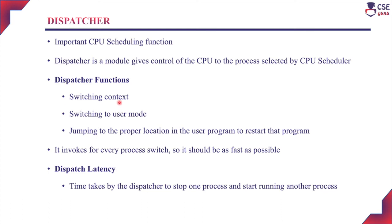Switching context means that whenever the CPU switches from one process to another, it needs to save the state of the current process and restore the state of the next process — this is called context switching, and the dispatcher component performs it. The dispatcher is also required when a process switches to user mode from system mode, and when jumping to the proper location in the user program to restart execution. Whenever the CPU switches between processes, the dispatcher's help is required.